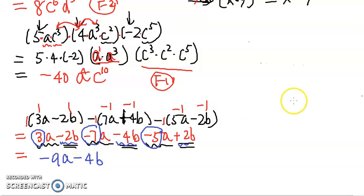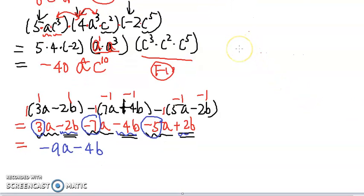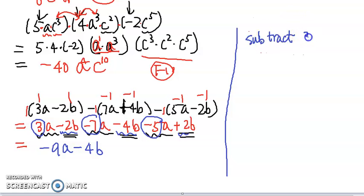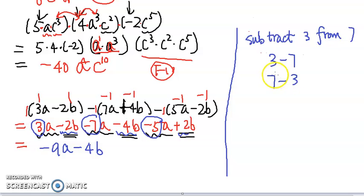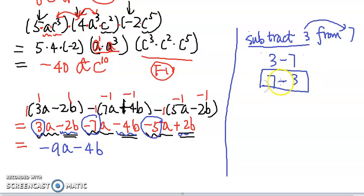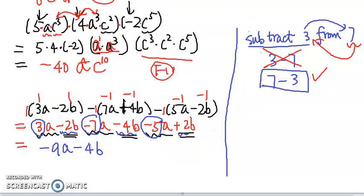That's the final answer for that one. Now the last problem says 'subtract,' so we need to pay attention. Before doing it, let's look at a simple example: subtract 3 from 7. You need to think — do we do 3 minus 7 or 7 minus 3? 'Subtract 3 from 7' means you take 3 away from 7, so you start from 7 and subtract 3. Doing 3 minus 7 following the literal order would be wrong. It has to be 7 minus 3. You have to reverse the order.